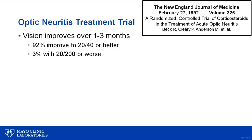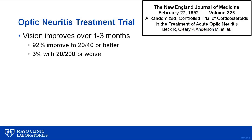Much of what we know about the treatment and natural history of optic neuritis comes from the landmark Optic Neuritis Treatment Trial, ONTT, that was completed in 1991. In this study, patients with acute optic neuritis were randomized to IV steroids, oral steroids, or placebo. This study found that all cases of optic neuritis tended to recover with or without treatment.